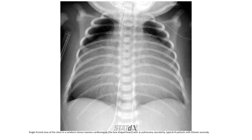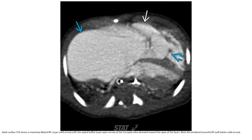Single frontal chest radiograph in a newborn demonstrates massive cardiomegaly with decreased pulmonary vascularity, which is typical of Ebstein's anomaly. Axial cardiac CTA shows a massively dilated right atrium with the septal leaflet of the tricuspid valve displaced towards the apex of the heart. Note the arterialized right ventricle on the lateral wall.